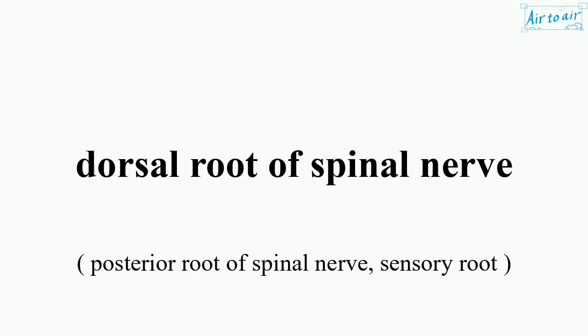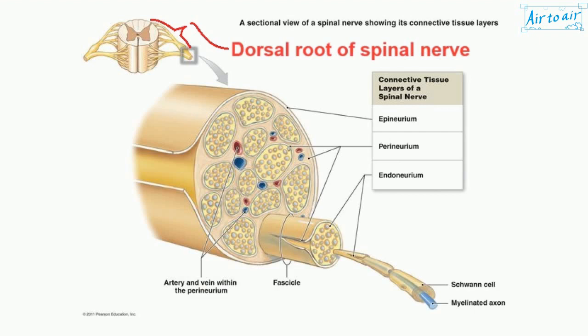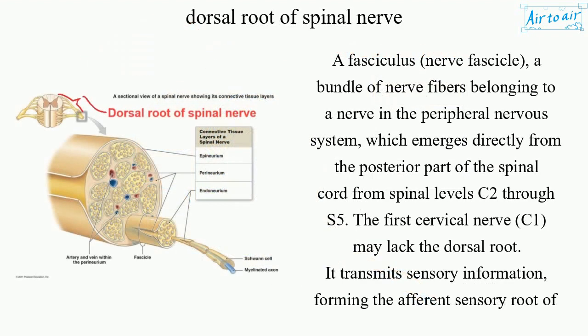Dorsal Root of Spinal Nerve. A fasciculus, or nerve fascicle, is a bundle of nerve fibers belonging to a nerve in the peripheral nervous system, which emerges directly from the posterior part of the spinal cord from spinal levels C2 through S5.